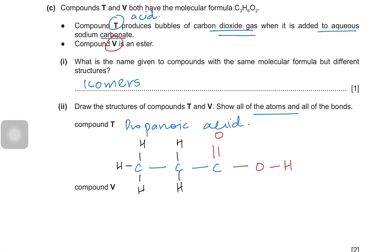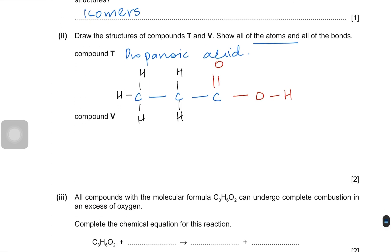Compound V is an ester. So we can put two carbons on one side and third carbon on the other side. In between we can put the ester functional group which looks like this. And the rest has to be hydrogens.